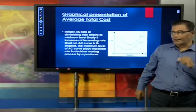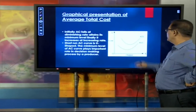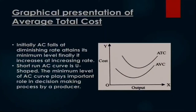Now to get ATC — average total cost — we take total cost and divide by units of output. You will get the same shape — U-shape. Now let us talk about the relationship between ATC and AVC: this gap is reduced to the minimum level.